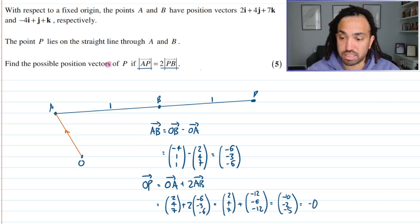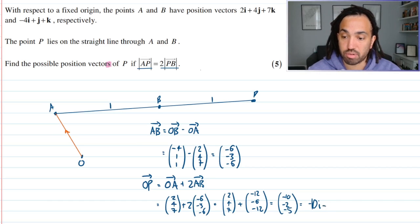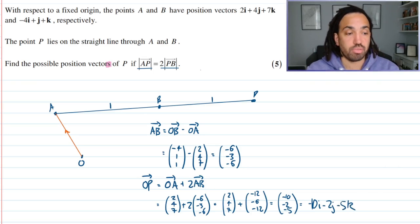And again, I must write it in the same form that they're writing their vectors in. So minus 10i minus 2j minus 5k. Beautiful. Okay.